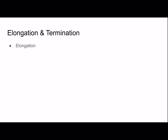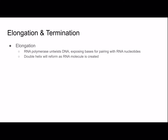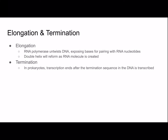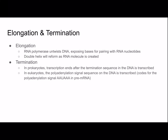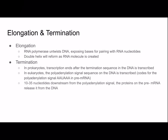During elongation, RNA polymerase untwists DNA, exposing bases for pairing with RNA nucleotides, and the double helix reforms as the RNA molecule is created. For termination, in prokaryotes, transcription ends after the termination sequence in the DNA is transcribed. In eukaryotes, the polyadenylation signal sequence is transcribed, coding for the signal AAUAAA in the pre-mRNA. Then, 10 to 35 nucleotides downstream from that signal, proteins on the pre-mRNA release it from the DNA, and transcription ends when RNA polymerase falls off.